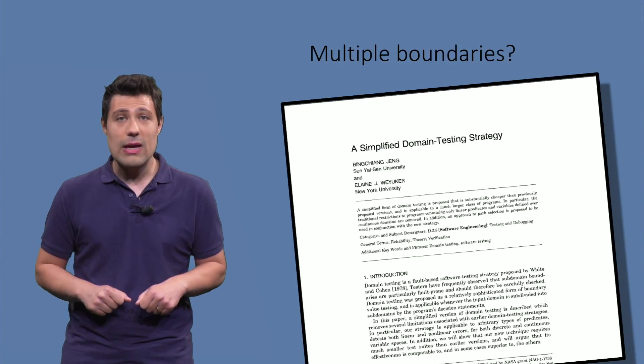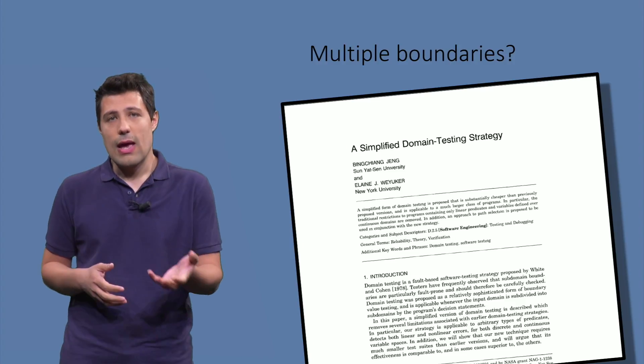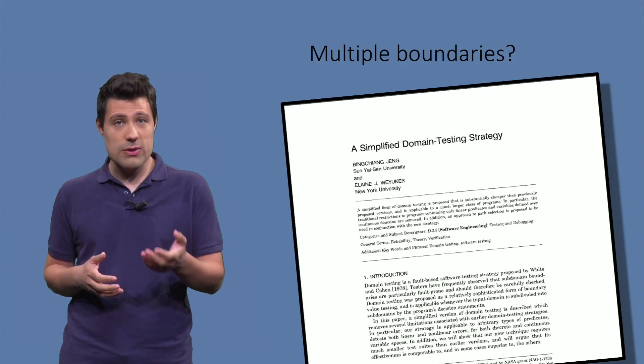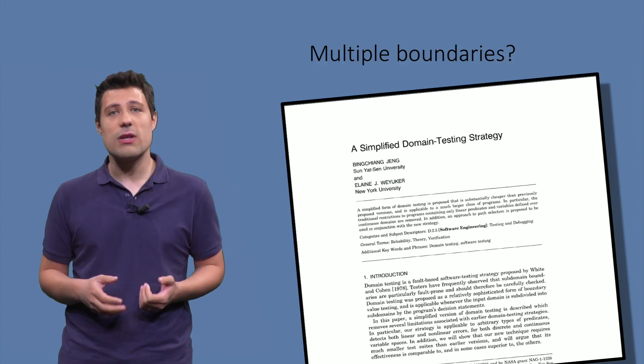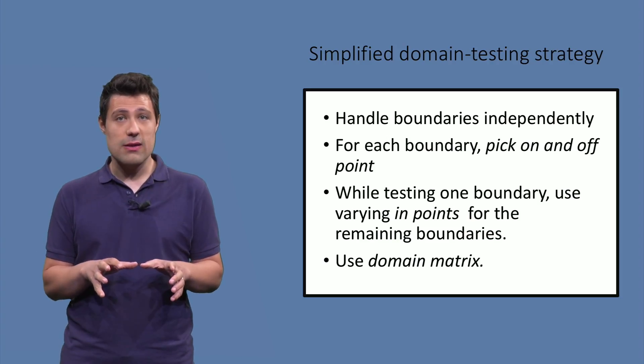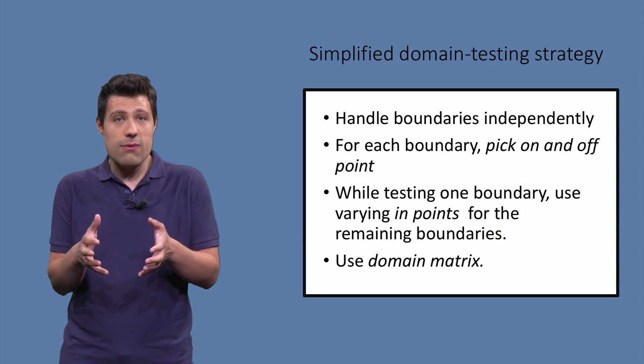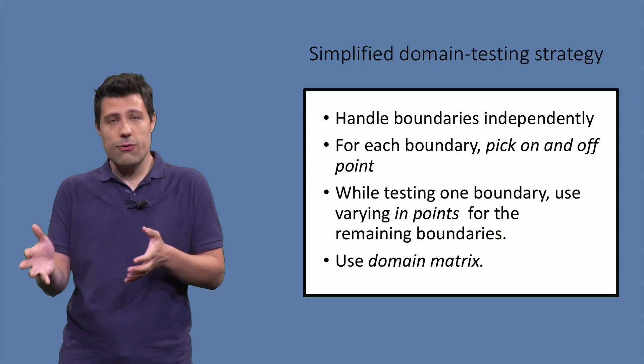But how can we think of on and off points if we have multiple boundaries? I'm now going to discuss the approach proposed in the Simplified Domain Strategy paper. The suggestion that this paper makes is that we should handle every boundary in an independent way. And for each boundary that we have, we should pick the on and the off point.